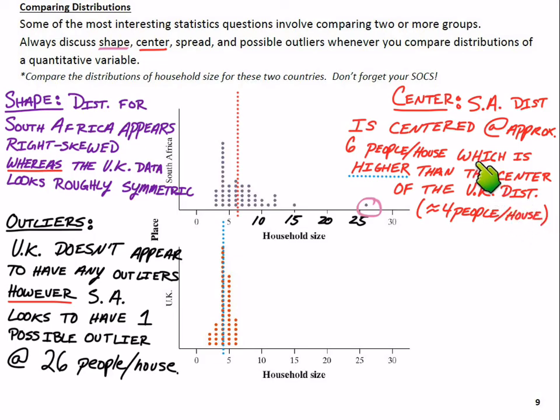It's higher than the center for the UK distribution, which is about approximately four people per house. And these are just rough observations. So it's okay to give approximate values. So approximately four people per house for that UK distribution. And again, emphasize on the comparative language here. One is higher than the other. I didn't just list facts and give you the center for each one. I said which one was higher.